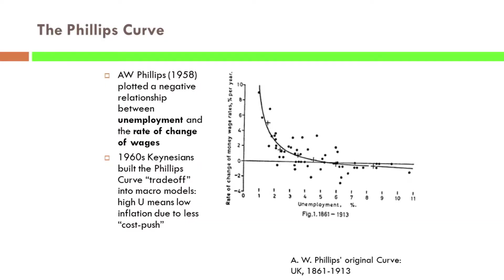The Phillips curve is a relationship between unemployment and inflation. So if you know the unemployment rate, it enables you to predict or determine the inflation rate. Inflation becomes a function of slack or tightness in the labor market.